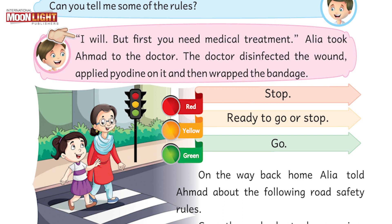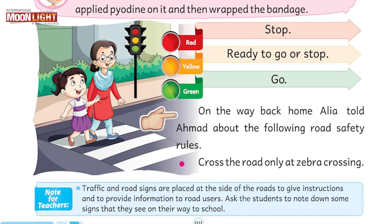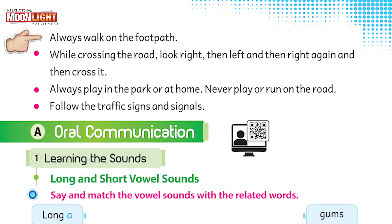Alia took Ahmed to the doctor. The doctor disinfected the wound — disinfected means to clear or clean — applied Pyodine on it, and then wrapped a bandage. On the way back home, Alia told Ahmed about the following road safety rules: Number one, cross the road only at zebra crossing. Number two, always walk on the footpath. Number three, while crossing the road look right, then left, and then right again, and then cross.